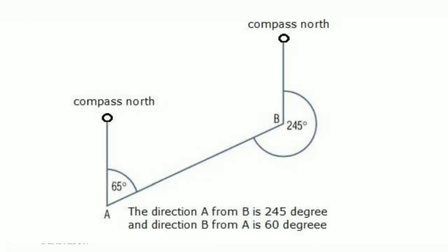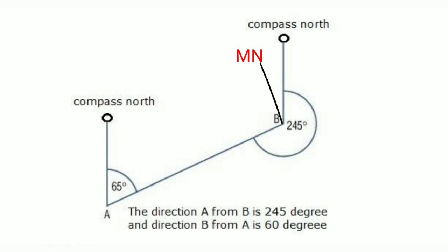As an example of compass north: if we are taking a datum of compass north to measure direction, in this picture the direction of A from B is 245° and the direction of B from A is 65° — both are compass directions. Suppose magnetic north is to the left of compass north, so the magnetic direction of A from B is greater than the compass direction, because the compass is deviated by the metallic parts of the aircraft. That is why magnetic north and compass north have different values.